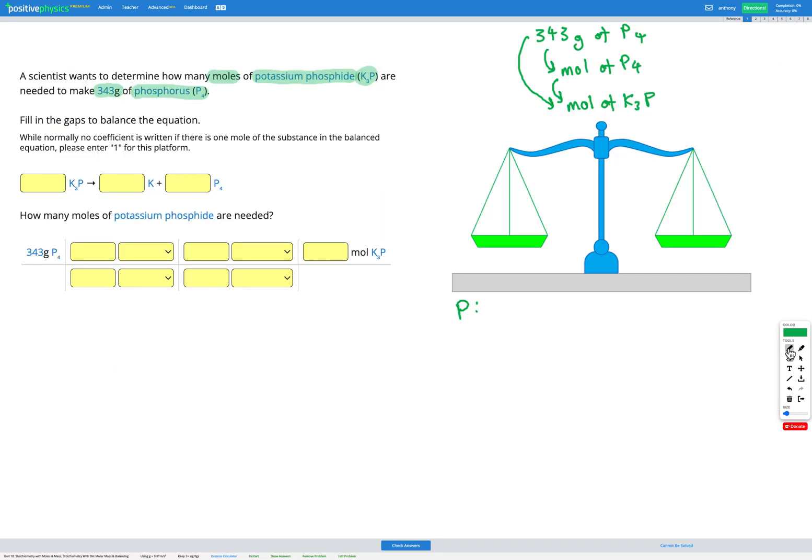Phosphorus has a relative atomic mass of 30.97 grams per mole. And in P4, we've got four lots of phosphorus. So we've got four lots of 30.97 grams per mole, which gets us a molar mass of 123.88 grams per mole.